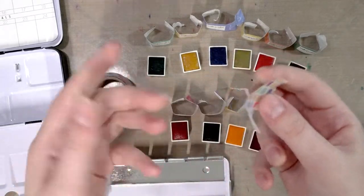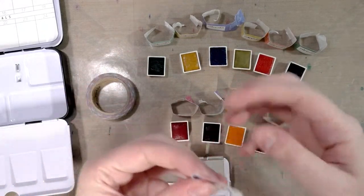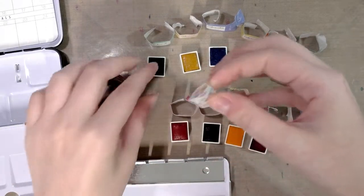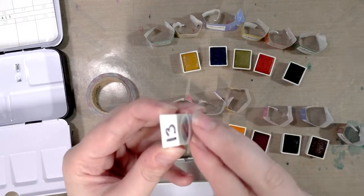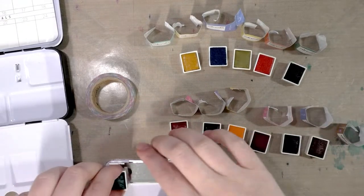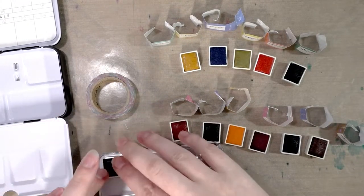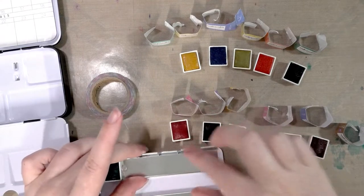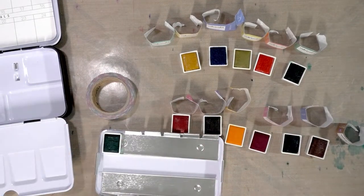You just don't want to use permanent tape because it's going to be harder to remove your pans from the palette. We're going to take a piece of washi tape and place it on the bottom of the pan.